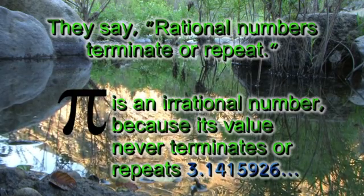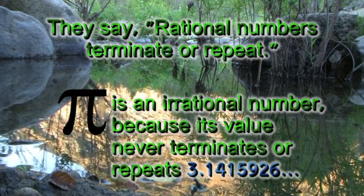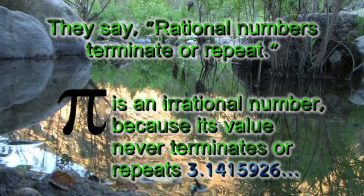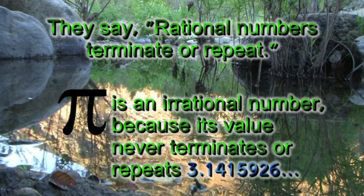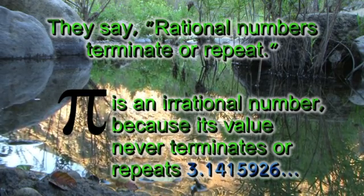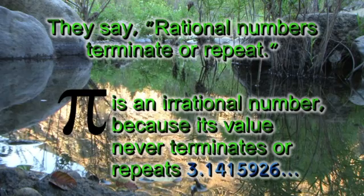Pi is an irrational number because its value never terminates or repeats: 3.1415926 — all different numbers forever.